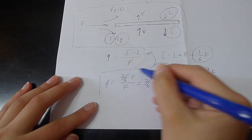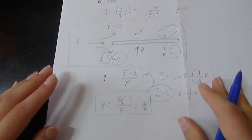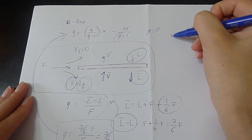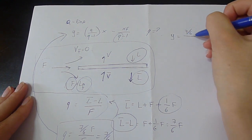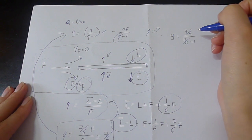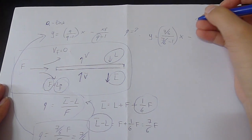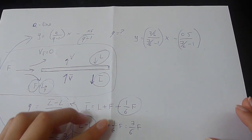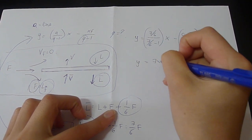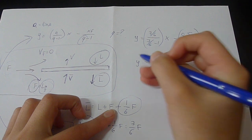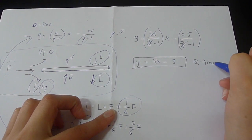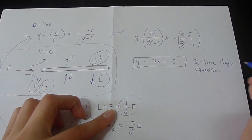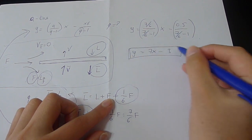Substituting Q = 7/6 into the Q line equation gives Y = (7/6)/((7/6)−1) · X − XF/((7/6)−1), which simplifies to Y = 7X − 3. This is our Q line slope equation.